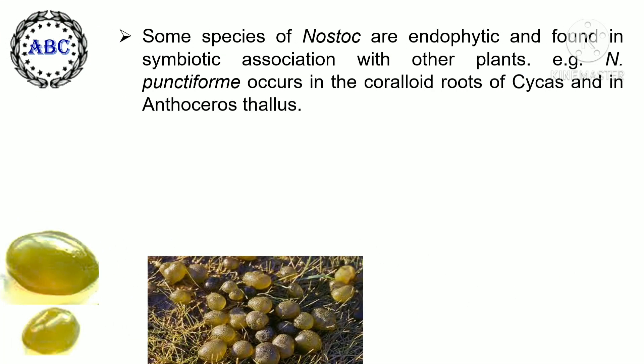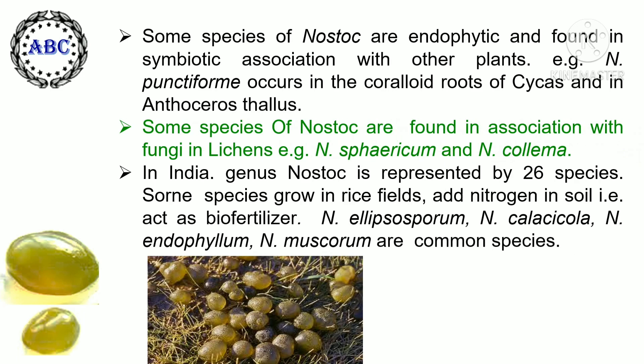Some species of Nostoc are endophytic and found in symbiotic association with other plants. For example, Nostoc punctiforme occurs in the coralloid roots of Cycas and in Anthoceros thallus. Some species of Nostoc are found in association with fungi in lichens, for example Nostoc sphaericum and Nostoc collema. In India, the genus Nostoc is represented by 26 species.